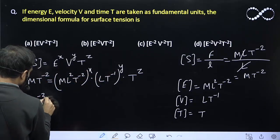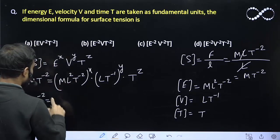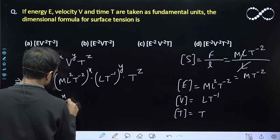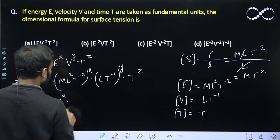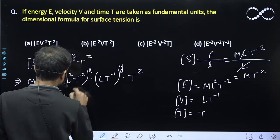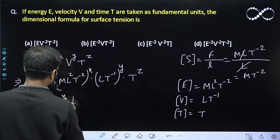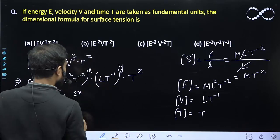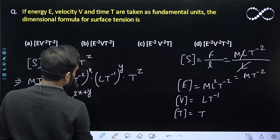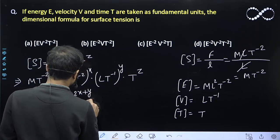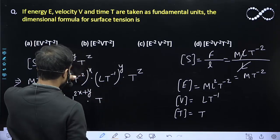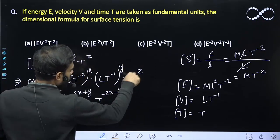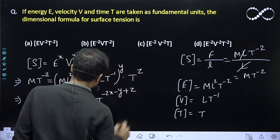MT raised to power minus 2 equals — let us combine all terms. Combining M: we get M raised to power x. Combining L: we get 2x from energy and y from velocity, so L raised to power 2x plus y. Combining T: we get minus 2x from energy, minus y from velocity, and z from time.